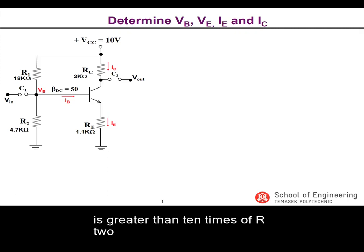After checking that the RIN base is greater than 10 times R2, we proceed to determine the voltage value of VB, the base voltage of the transistor, in step 2.